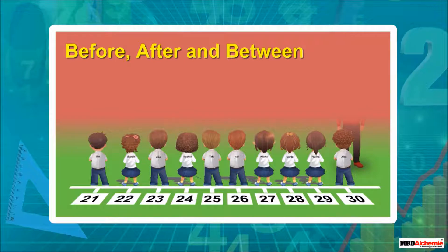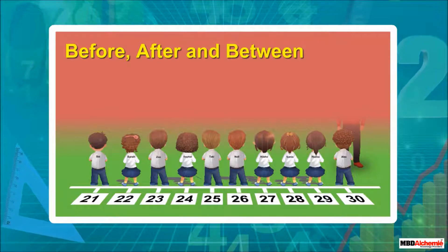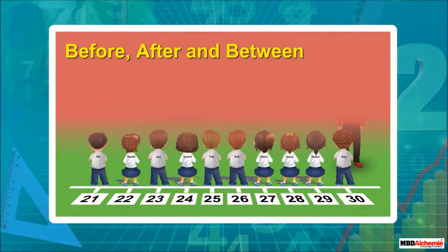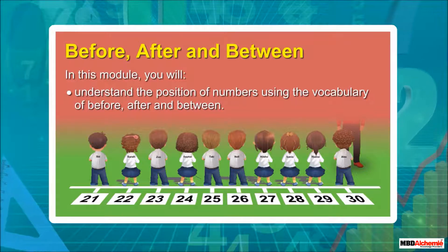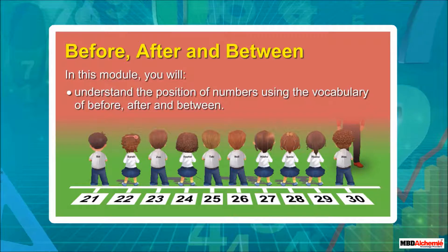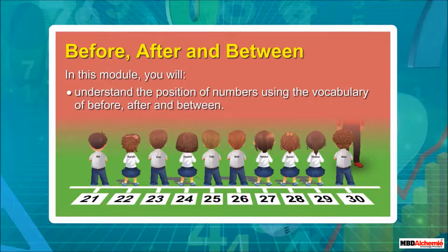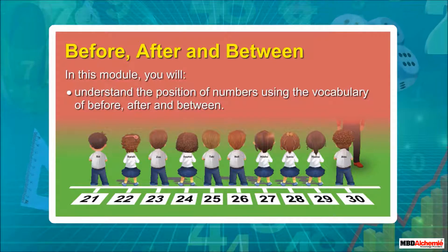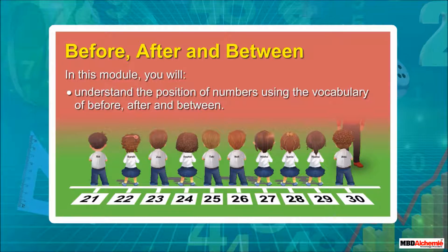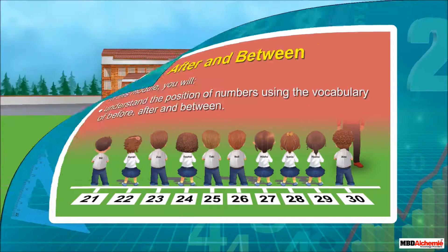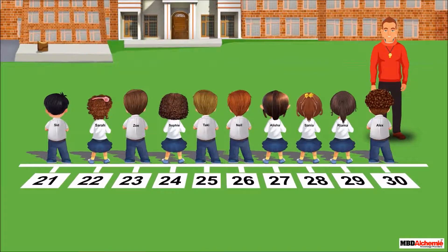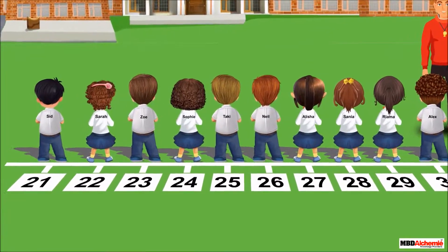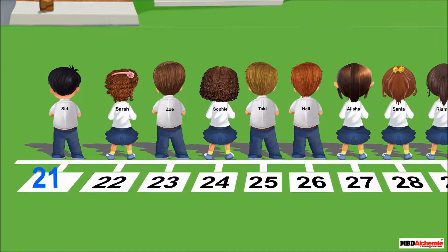Before, after, and between. In this module, you will understand the position of numbers using the vocabulary of before, after, and between. All the students are on the ground for their game period. Sid is standing at number 21.